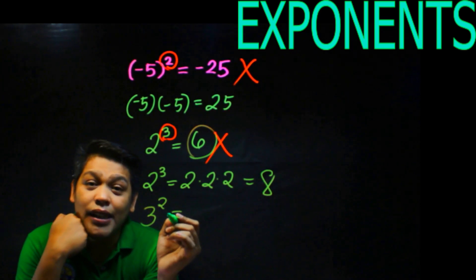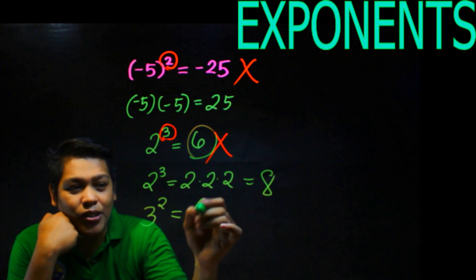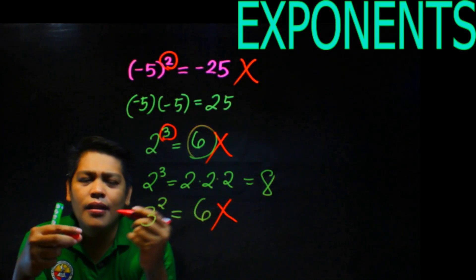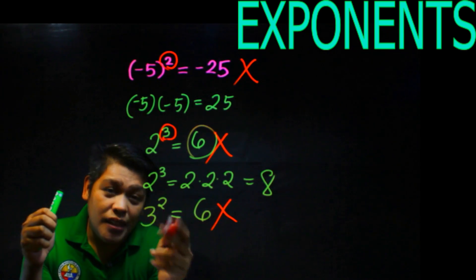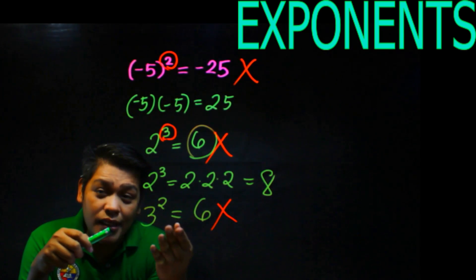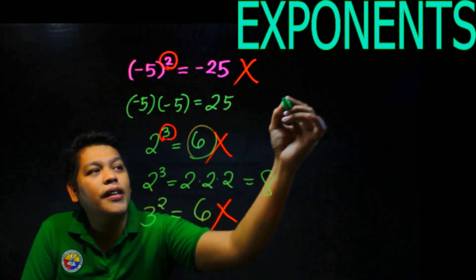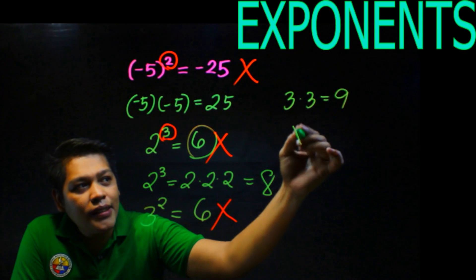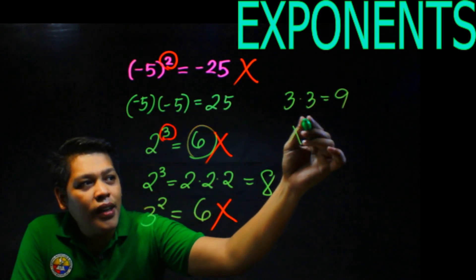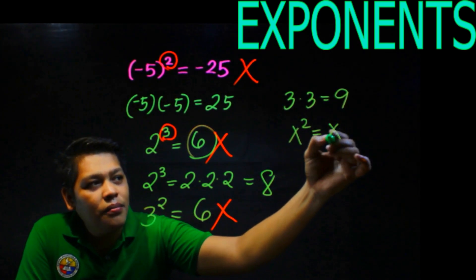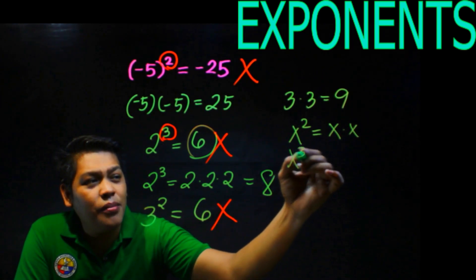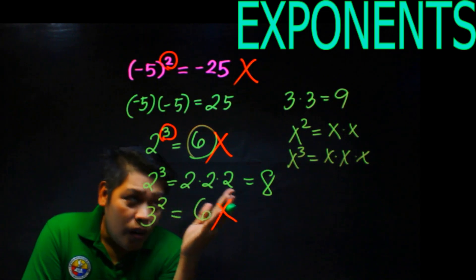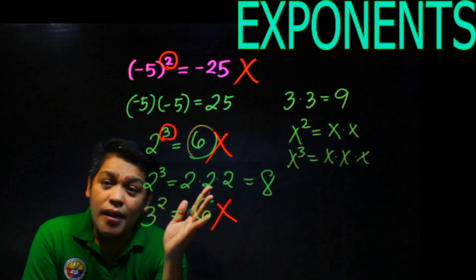Similarly, 3 squared — some students answer 6, which is wrong. They just multiply 3 times 2. The correct answer is 3 times 3 equals 9. If you have x squared, you multiply it 2 times. X cubed, multiply 3 times. To the fourth power, 4 times. That is the concept of exponents.